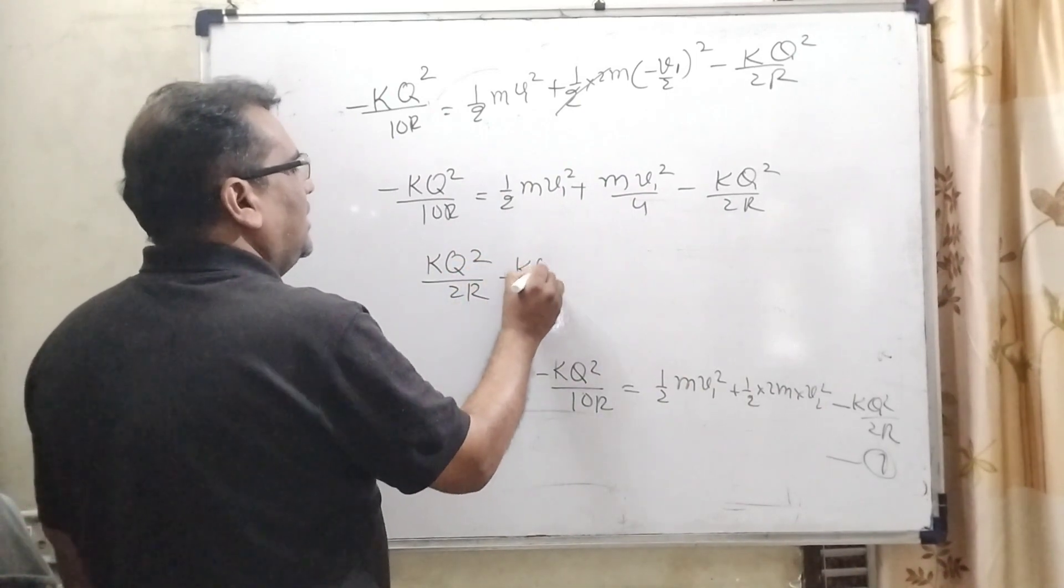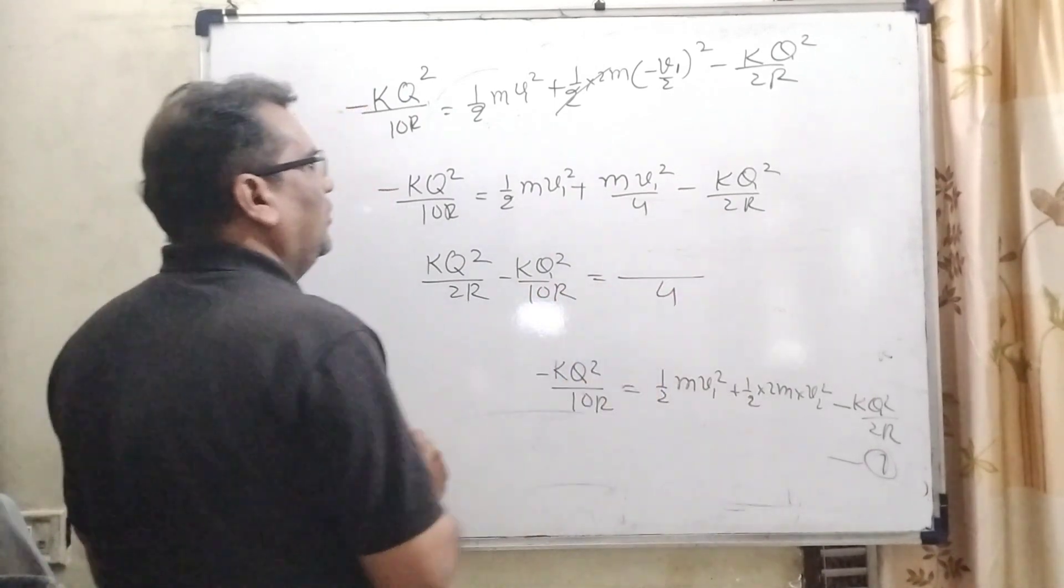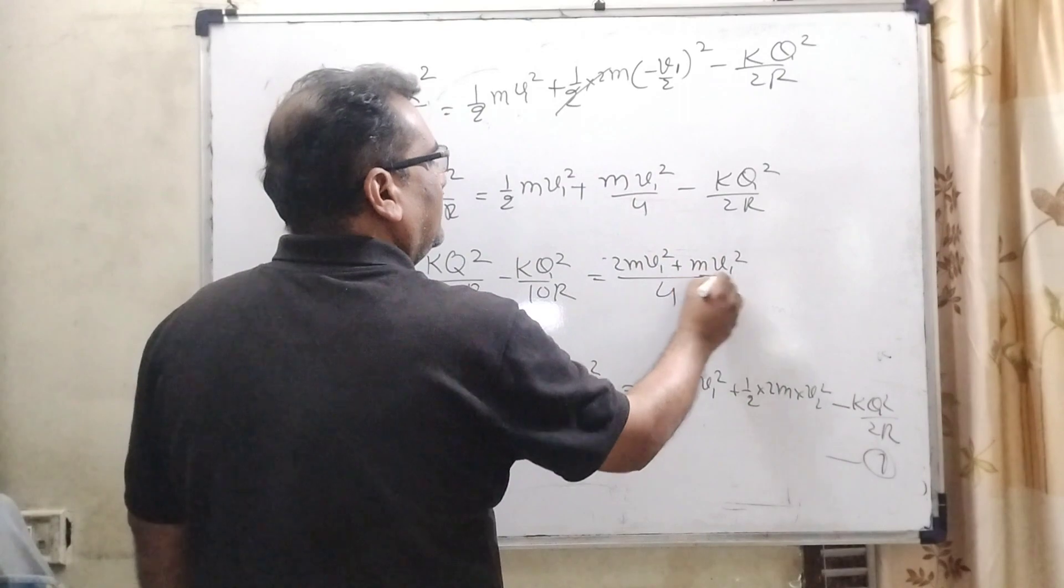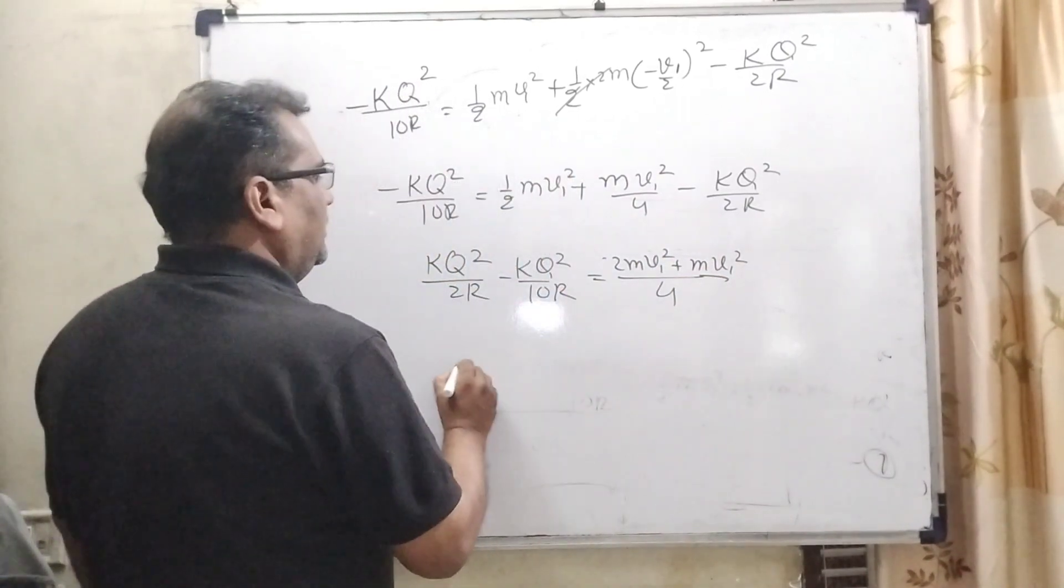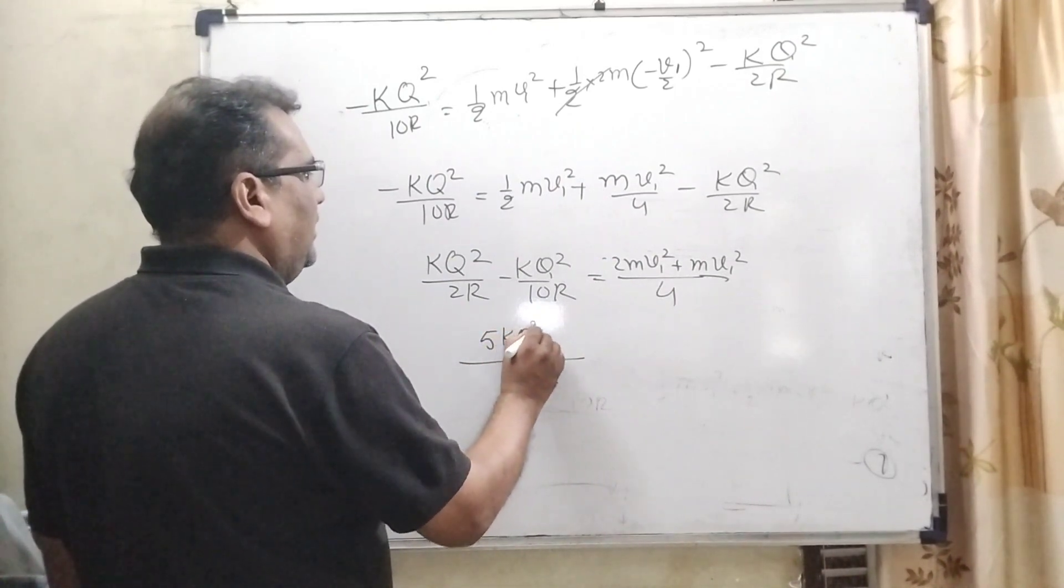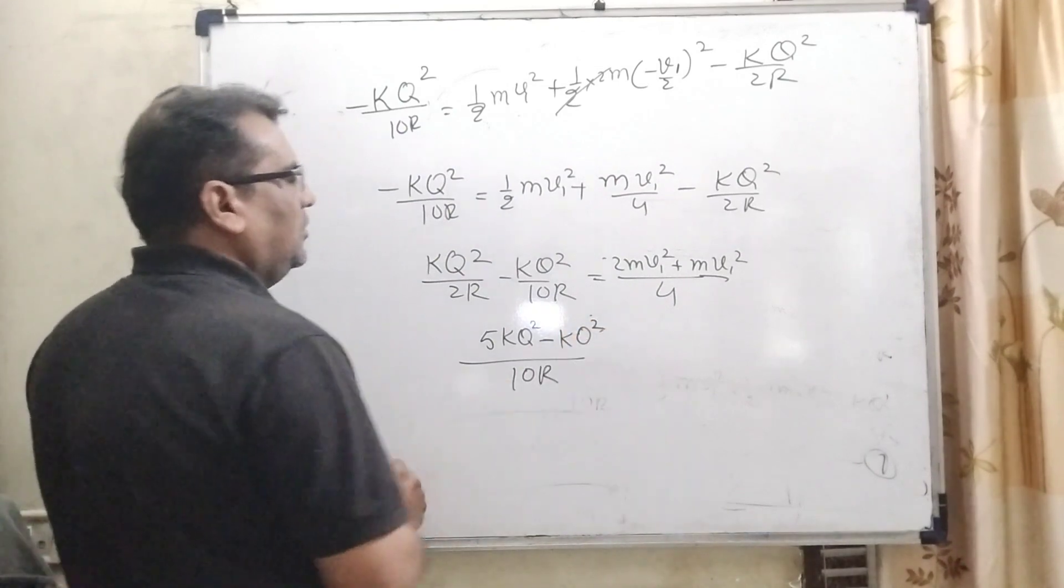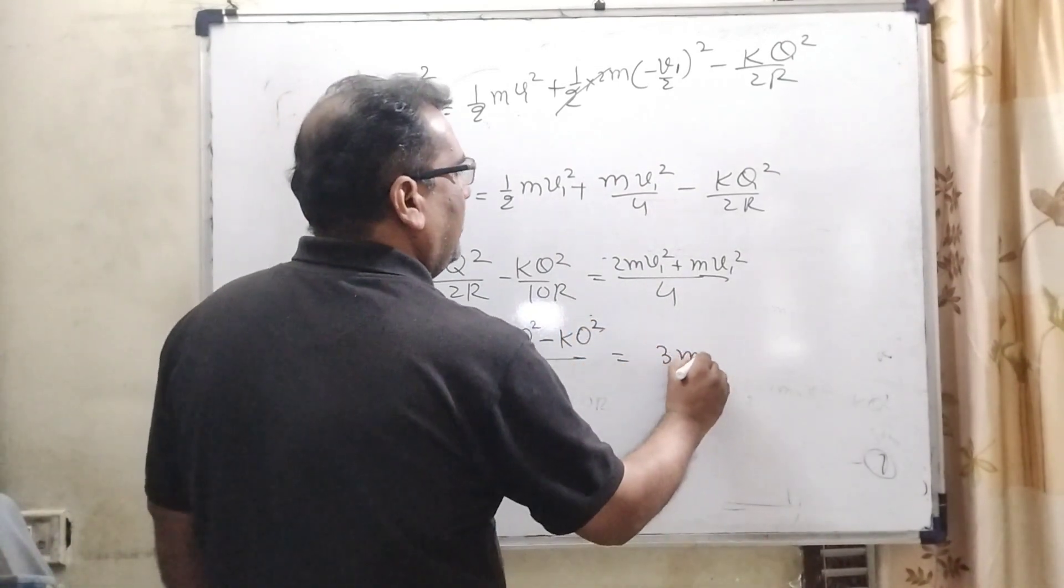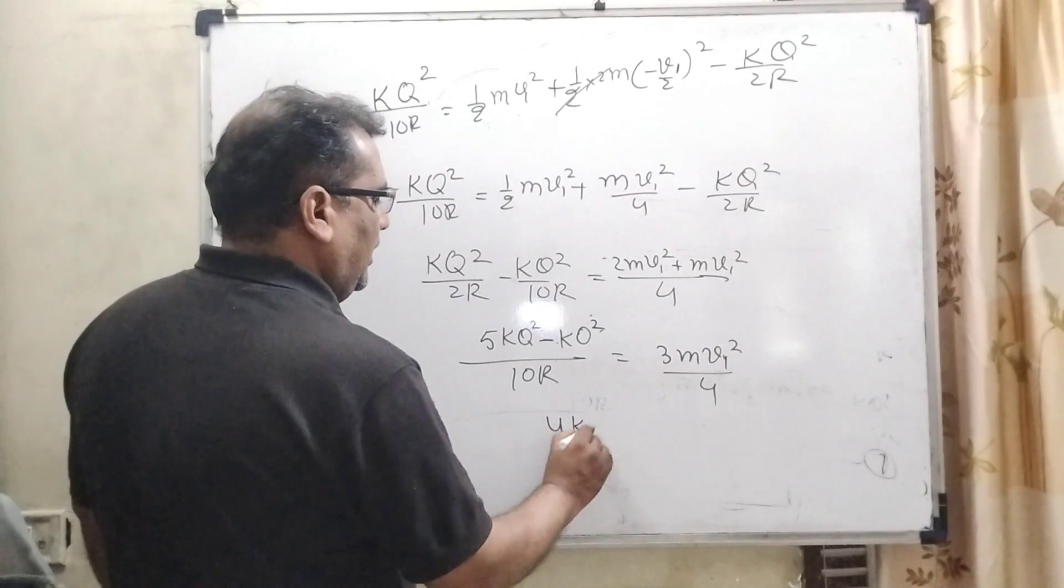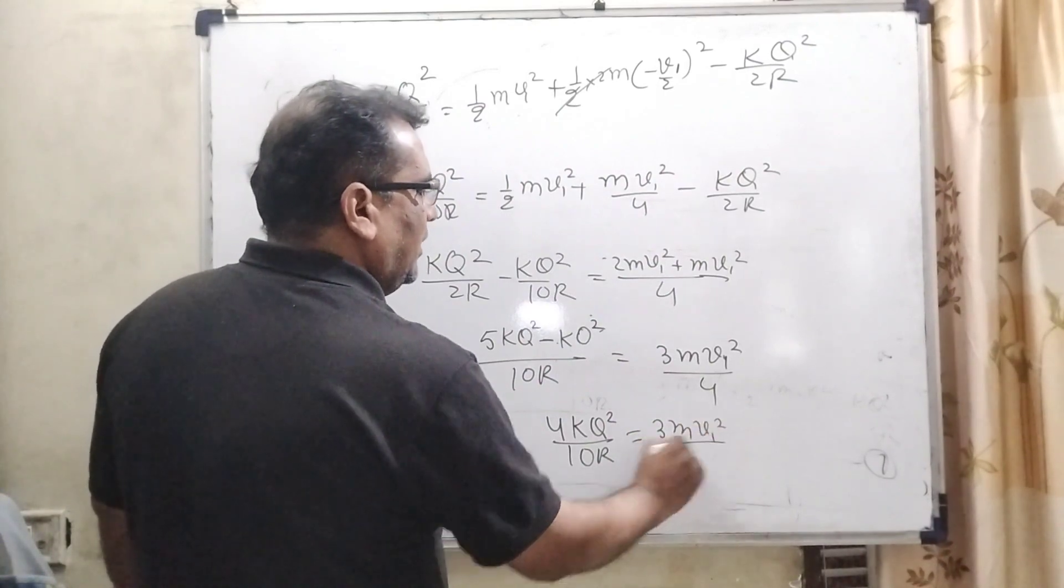KQ square upon 2R minus KQ square upon 10R is equal to taking the LCM 4, 2m V1 square, M V1 square. Now, KQ square upon 2R minus KQ square upon 10R is equal to 3m V1 square upon 4.